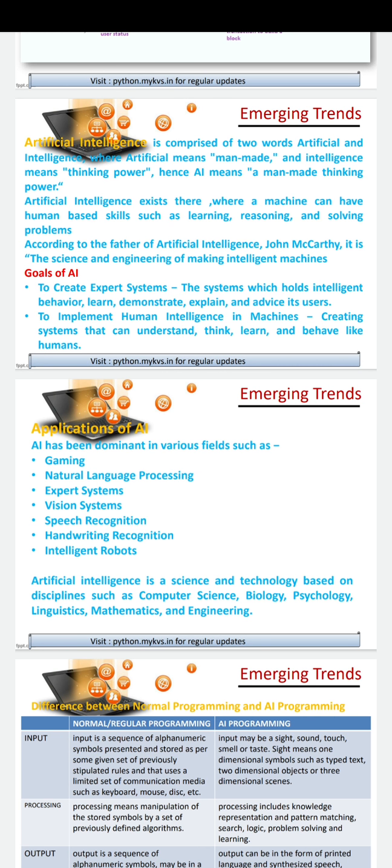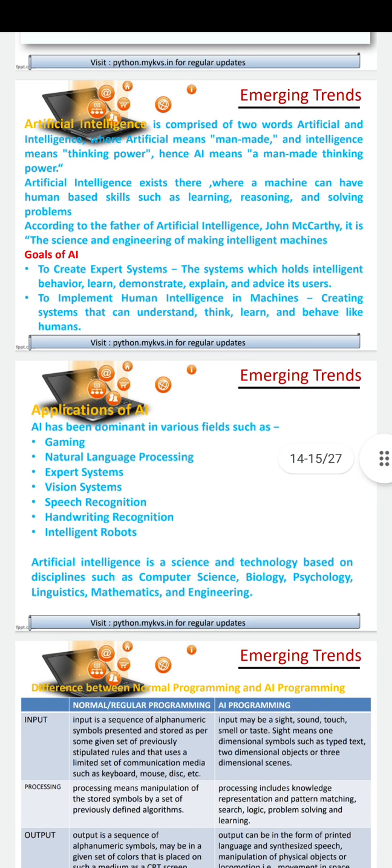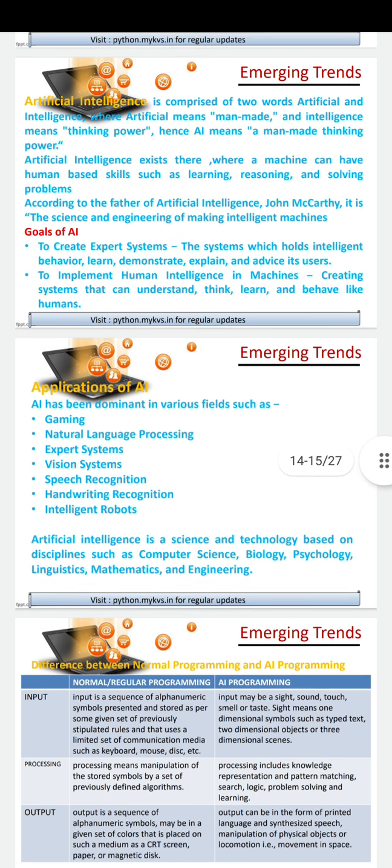So artificial intelligence is made up of two words. One is artificial and another is intelligence. Artificial means manmade. Intelligence means thinking power. Hence AI is a short form of artificial intelligence, means a manmade thinking power. Any manmade thing is called artificial.